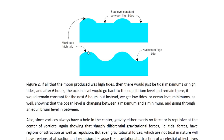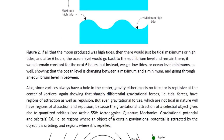The gravitational influence of the Moon is attractive when we're in the high tide region, but it's repulsive when we are in the low tide region — so it's both attractive and repulsive. Also, since vortices always have a hole in the center, gravity either exerts no force or is repulsive at the center of vortices. Again, showing that sharply differential gravitational forces — in other words, tidal forces — have regions of attraction as well as repulsion. But even gravitational forces which are not tidal in nature will have regions of attraction and repulsion.